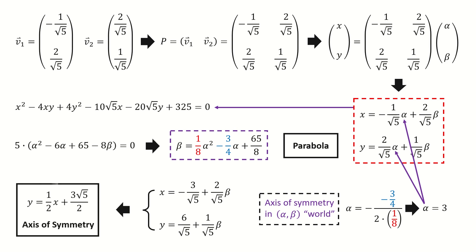After eliminating the parameter beta, we got the equation for the axis of symmetry in the xy coordinate.